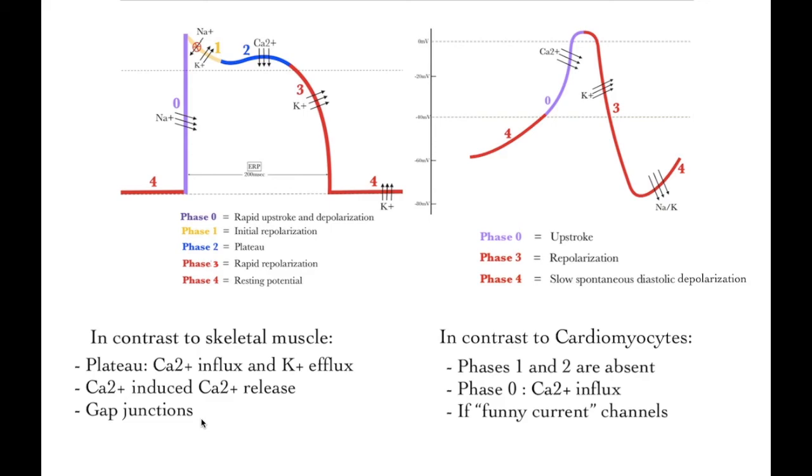In contrast to cardiomyocytes, there is no phase 1 and plateau phase or phase 2 in pacemaker action potential. In pacemaker cells, the increase in membrane voltage is mainly due to activation of L-type calcium channels, not voltage-gated sodium channels. In phase 4, the pacemaker potential is due to a group of channels that we call funny current or HCN channels.